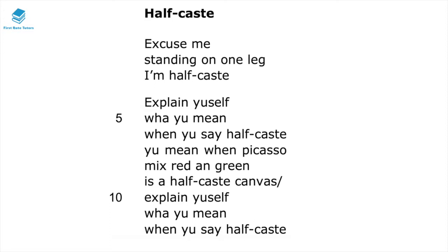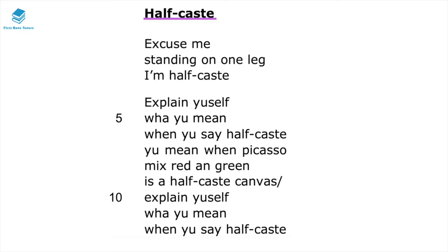These opening stanzas are really interesting, especially when you look at the title itself. When we think about the title half-caste, contextually, John Agard is an Afro-Guyanese poet — he is mixed race and he moved to the UK in the 1970s. This title explores the use of this derogatory word which refers to mixed race people as half-people. This is a very racist term.